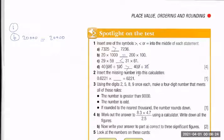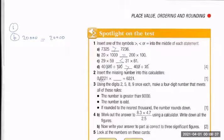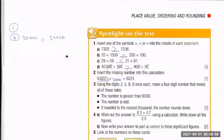Insert the missing numbers: 0.66221 times what equals 6221? Check the decimal point — it has moved four digits to get a whole number, so we multiply by 10,000.